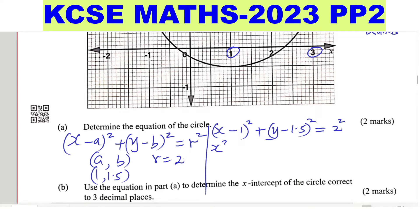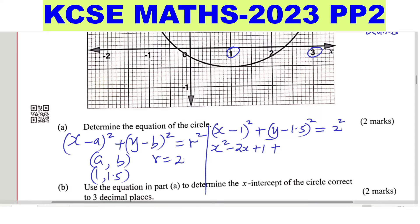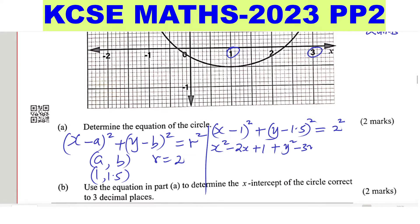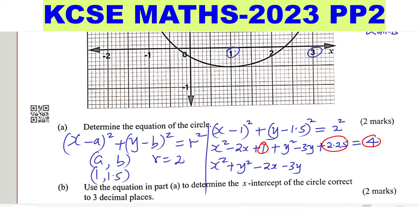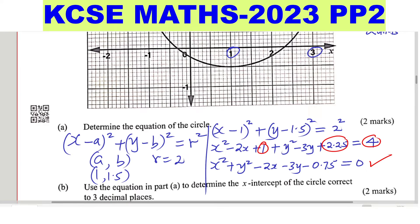Expanding the brackets: (x − 1)² gives x² − 2x + 1, and (y − 1.5)² gives y² − 3y + 2.25, which equals 2² = 4. Reorganizing: x² + y² − 2x − 3y, then bringing the constants together — 1 + 2.25 − 4 = −0.75 — gives the equation x² + y² − 2x − 3y − 0.75 = 0. That is the equation of the circle.